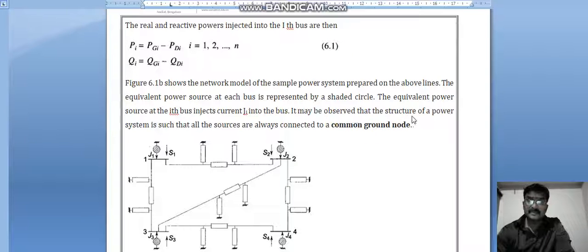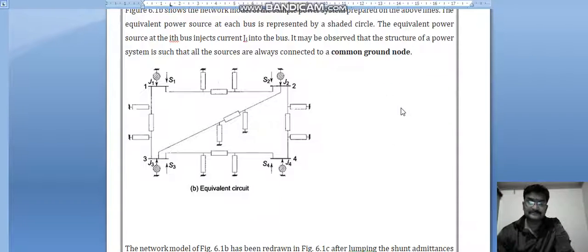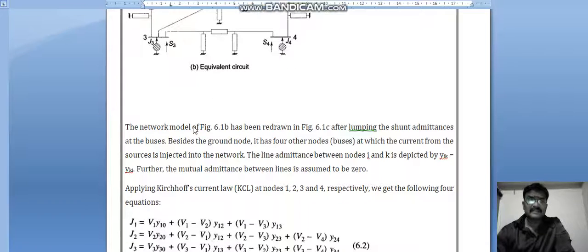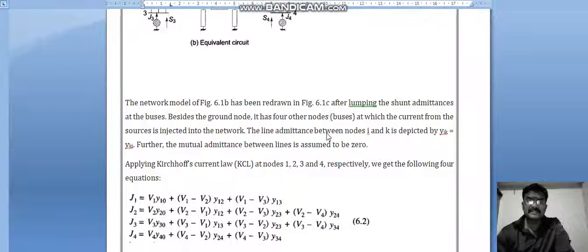It may be observed that the structure of the power system is such that all sources are always connected to a common ground node. The network model 6.1b has been redrawn in figure 6.1c after lumping the shunt admittance at the buses besides the ground nodes.